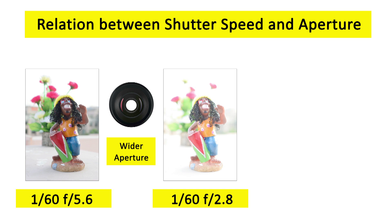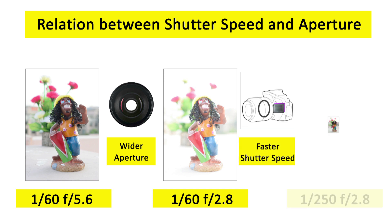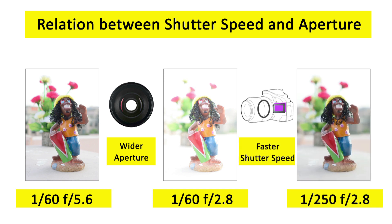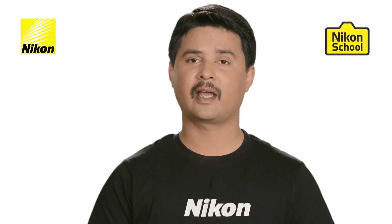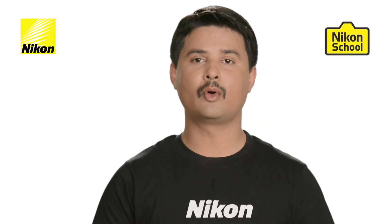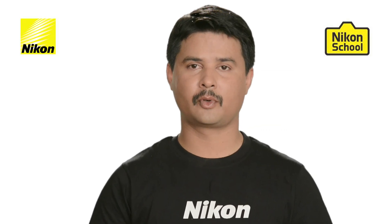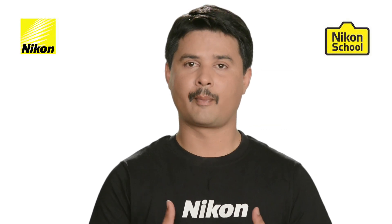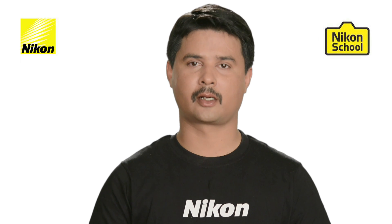In order to compensate for the overexposure, what you need to do is increase the shutter speed. You will then get a good shallow depth of field with a properly exposed image. We have now discussed the two components of exposure: aperture and shutter speed.